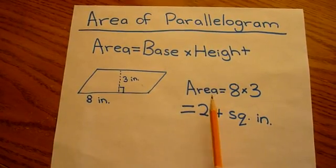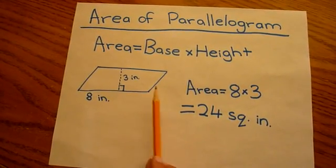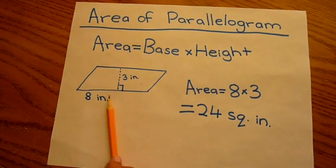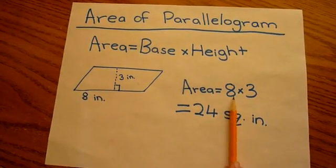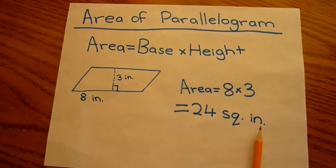So the area for this parallelogram would be 8 inches times 3 inches, and that would equal 24 square inches.